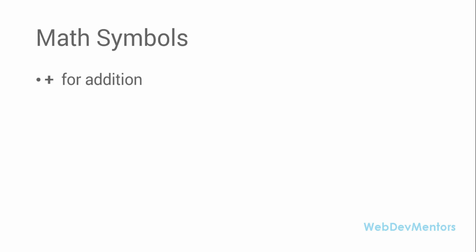Plus is for addition — you can add two numbers in order to get a value. Minus is for subtraction — you can subtract two numbers. And slash is for division — dividing two numbers can be performed with this symbol.